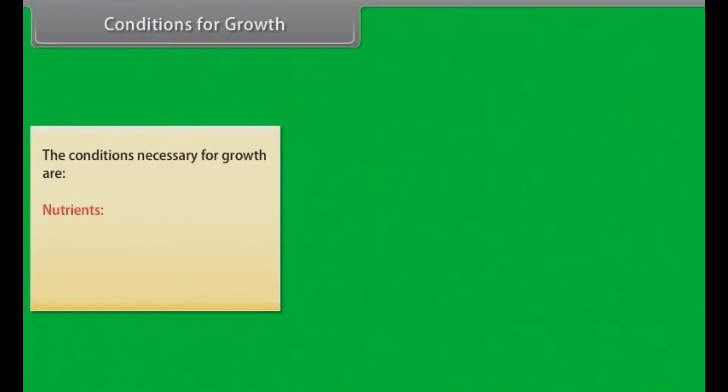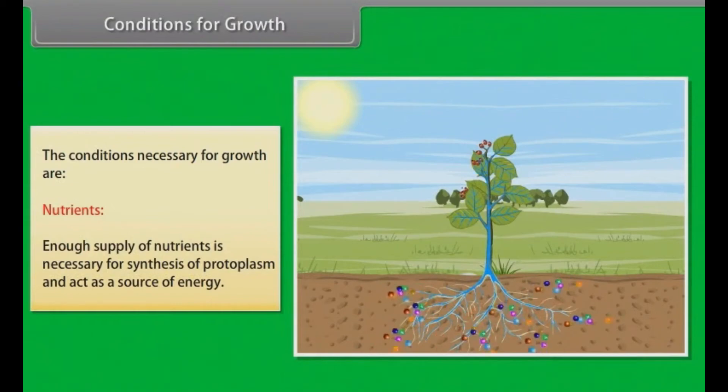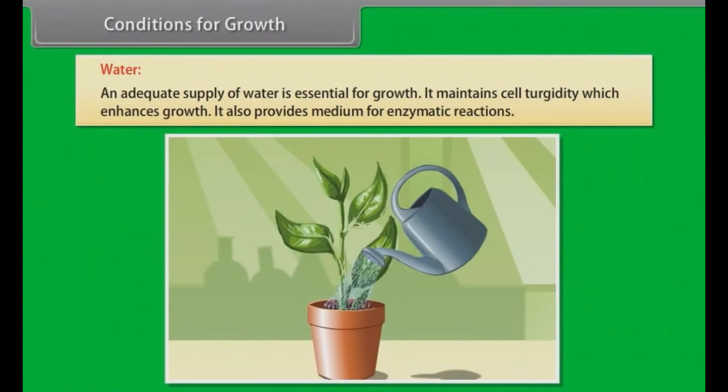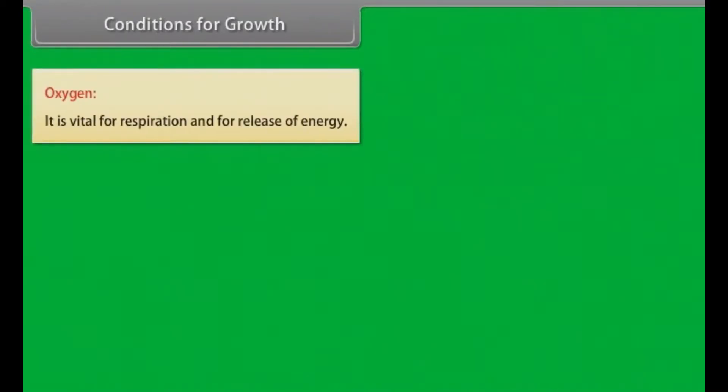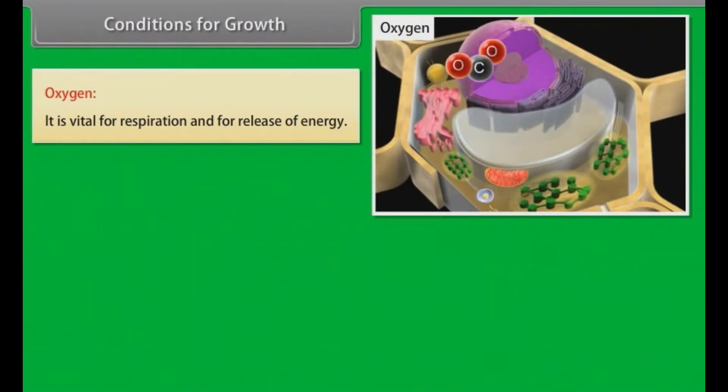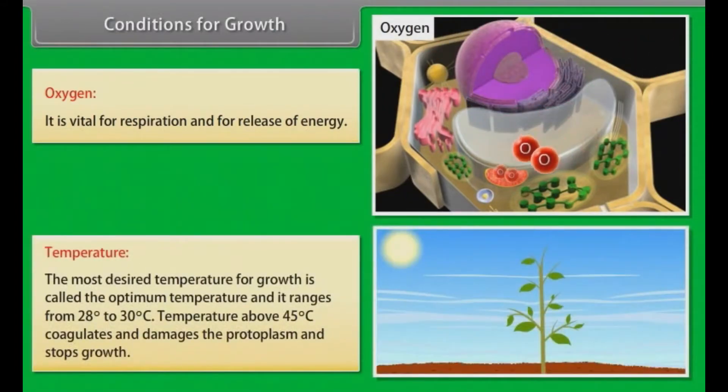Conditions for growth. The conditions necessary for growth are: nutrients—enough supply of nutrients is necessary for synthesis of protoplasm and acts as a source of energy. Water—an adequate supply of water is essential for growth. It maintains cell turgidity which enhances growth. It also provides medium for enzymatic reactions. Oxygen—it is vital for respiration and for release of energy. Temperature—the most desired temperature for growth is called the optimum temperature and it ranges from 28 to 30 degrees Celsius. Temperature above 45 degrees Celsius coagulates and damages the protoplasm and stops growth.